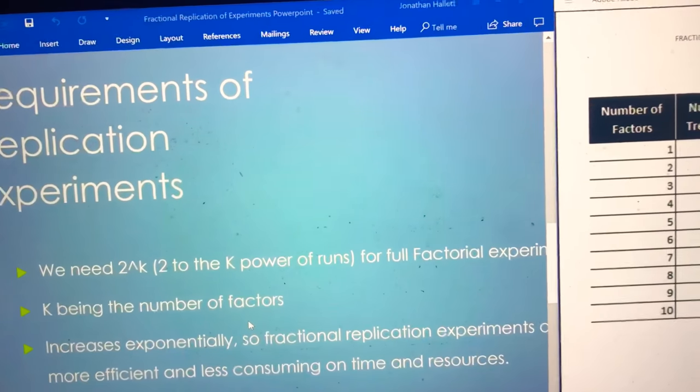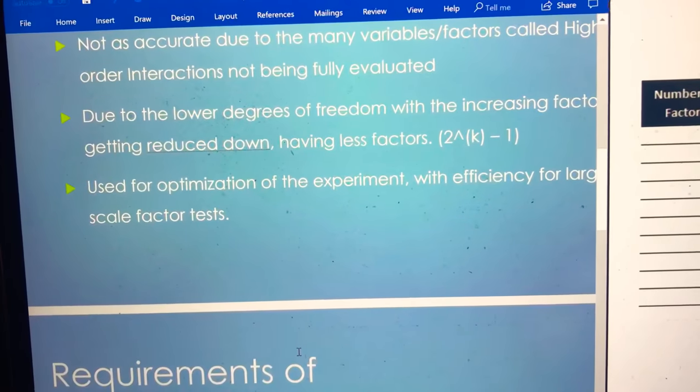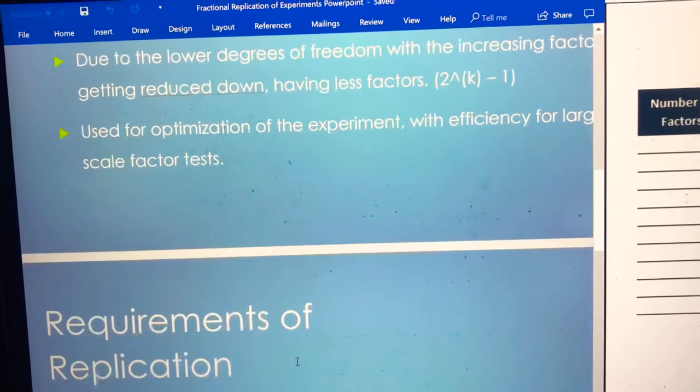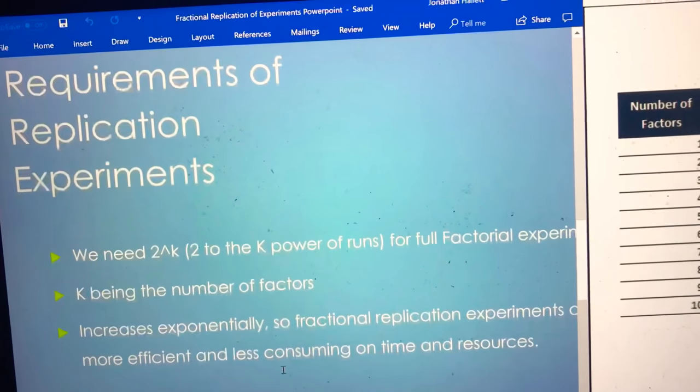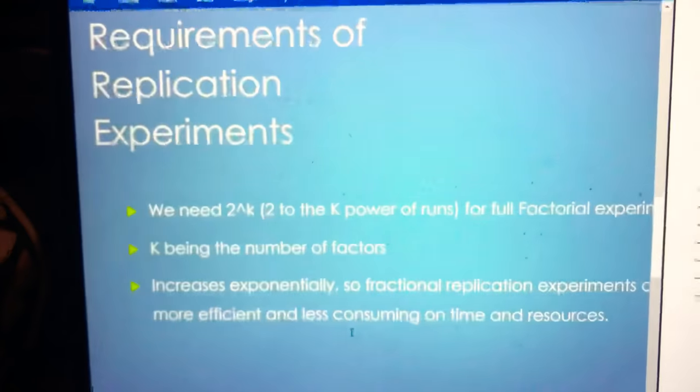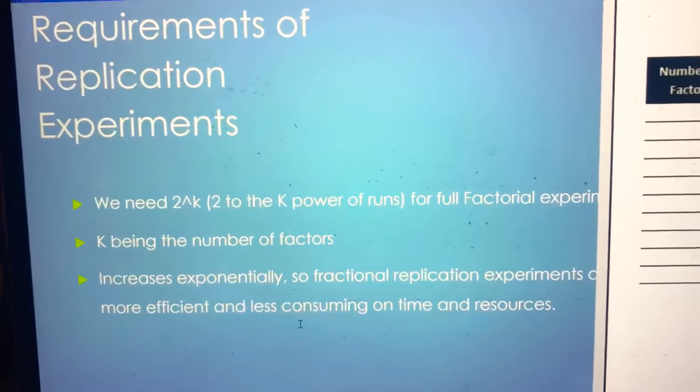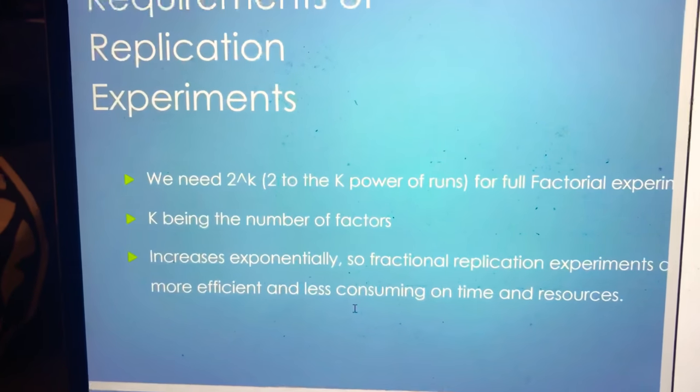It helps optimize the experiment by having fewer large-scale factor tests. In these experiments we need 2 to the k in full replication, k being the number of factors, and this increases exponentially.